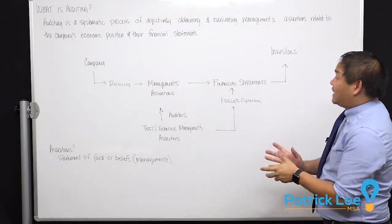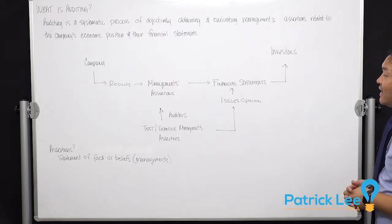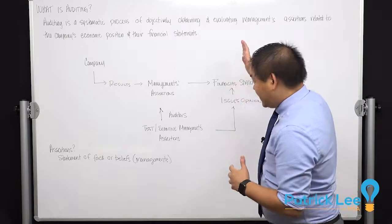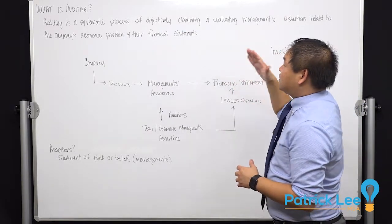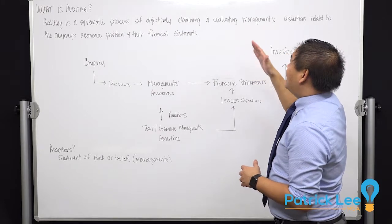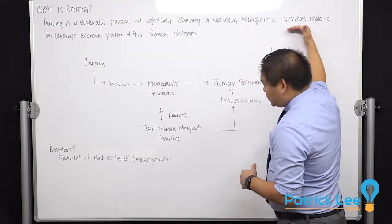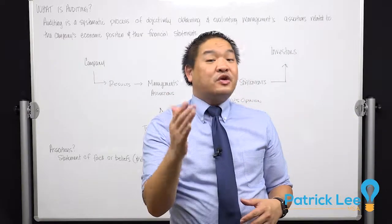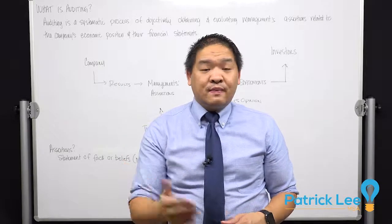Auditing is a systematic process of objectively obtaining and evaluating management's assertions related to the company's economic position and their financial statements. One thing I want to point out is that it says a systematic process of objectively obtaining and evaluating management's assertions — so we're not necessarily testing the financial statements per se, we are testing management's assertions.